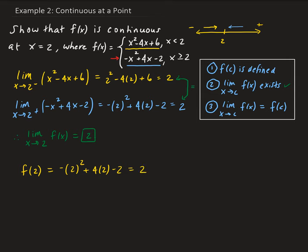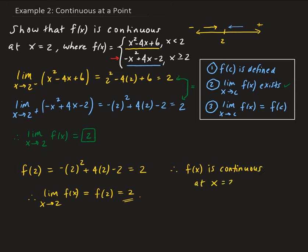That gives us a value of 2. Therefore, we showed that the limit of our function as x approaches 2 is equal to 2, which equals the function evaluated at 2. So therefore, we can say that f of x is continuous at x equals 2.